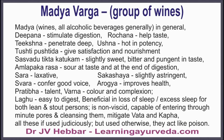Madhya Varga or group of wines: all alcoholic beverages including wine in general stimulate digestion, help taste, penetrate deep into the body tissues, are hot in potency, give satisfaction to the mind, and provide nourishment. They are slightly sweet, bitter and pungent in taste, sour at the end of digestion, laxative, slightly astringent, and good for voice, health, intelligence, color, and complexion. They are easily digestible, beneficial to those having loss of sleep or excess sleep, beneficial for both lean and stout persons, non-viscid, capable of entering through minute pores and cleansing them, and mitigate vata and kapha. All these characters apply only if used judiciously; if used excessively, they act like poison.